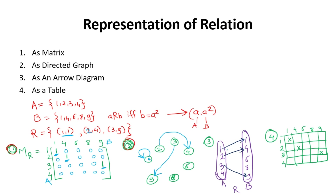The third representation is an arrow diagram. Write elements of the first set inside one ellipse — {1,2,3,4} — and elements of the second set inside another ellipse — {1,4,6,8,9}. Draw arrows between elements where the ordered pair exists: 1→1, 2→4, and 3→9. The last representation is a table, where rows are your first set, columns are your second set, and you place a cross where the element pair is present in the relation.